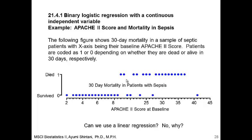In this video, we are going to learn binary logistic regression with a continuous independent variable. Example number one uses data from patients who are admitted to the ICU with sepsis. We will examine the Apache 2 score's relation to mortality. The following figure shows 30-day mortality in a sample of septic patients, with the x-axis being their baseline Apache 2 score. Patients are coded as 1 or 0 depending on whether they are dead or alive at 30 days, respectively.